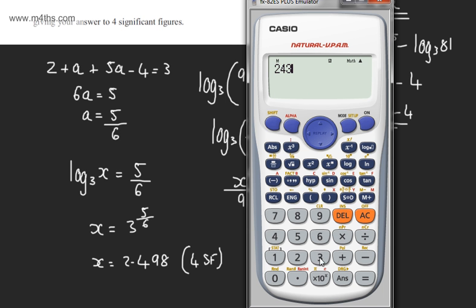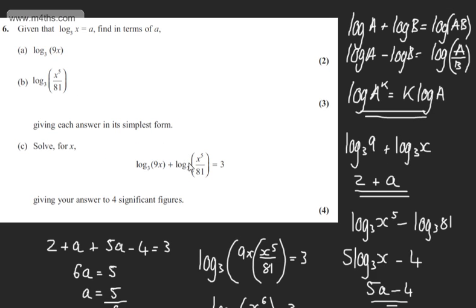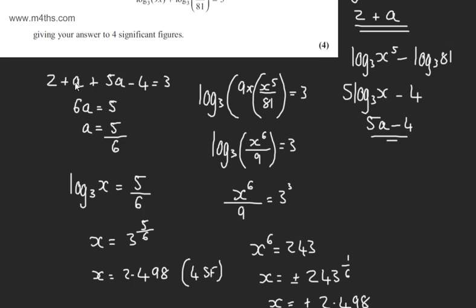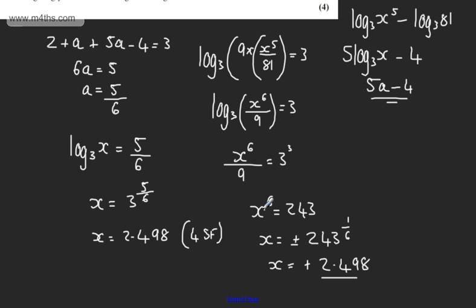If we look at this, 243 to the power of 1/6 will give us exactly the same value. We do need to state though that we're going to take the positive root as the positive root is the only valid solution. So we can say x is equal to positive 2.498 again. That's correct to four significant figures. We can't have a negative value as we can't take the log of a negative number. So I suggest this way is a lot more straightforward but this was also an option.